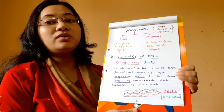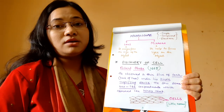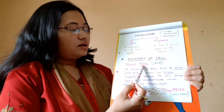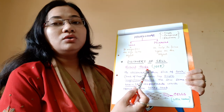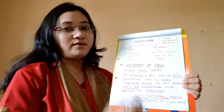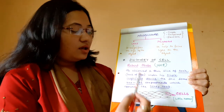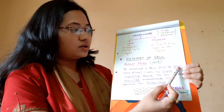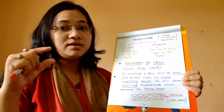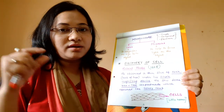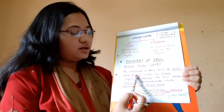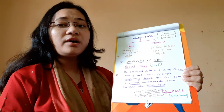Now let us look at the discovery of cells. Cells were discovered by an English scientist called Robert Hooke in the year 1665. He observed a thin slice of cork — the bark of a tree — under a simple magnifying device, a primitive type of microscope made up of lenses and mirrors.